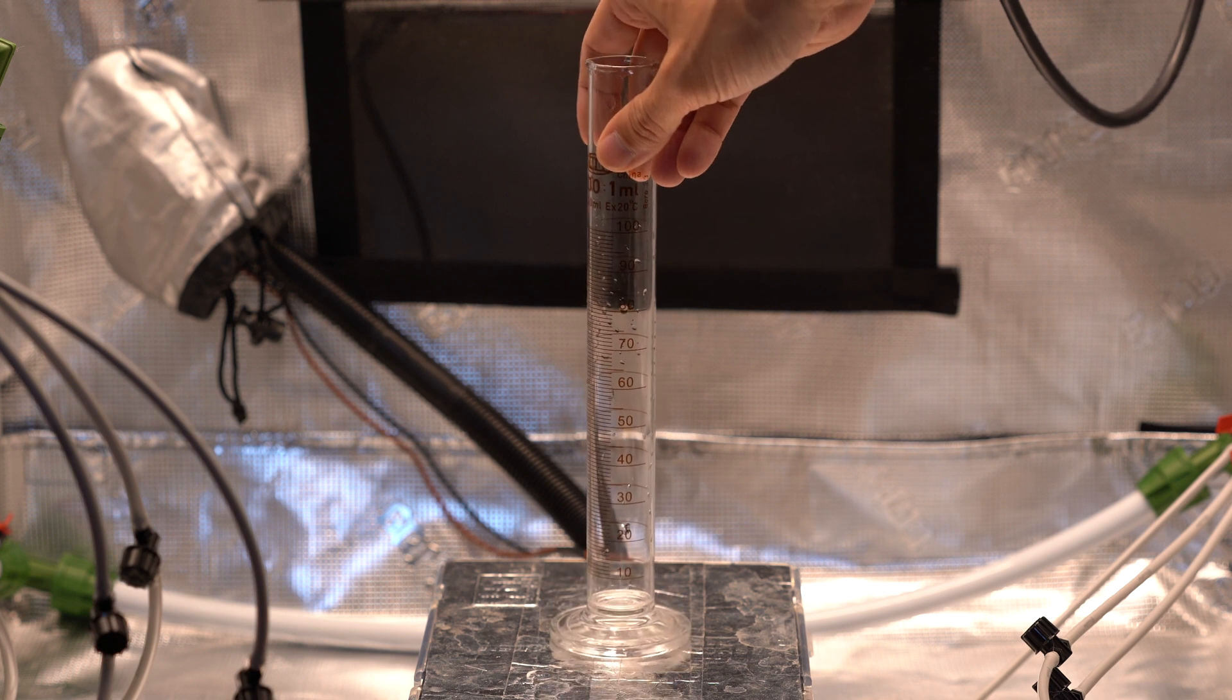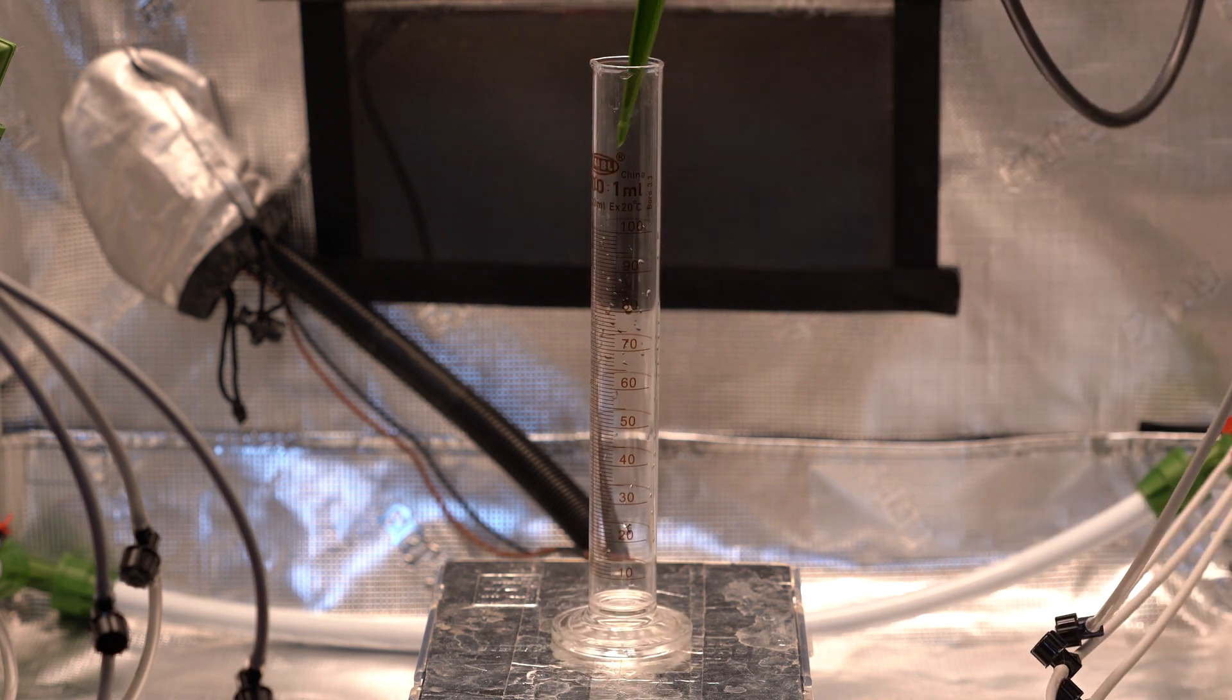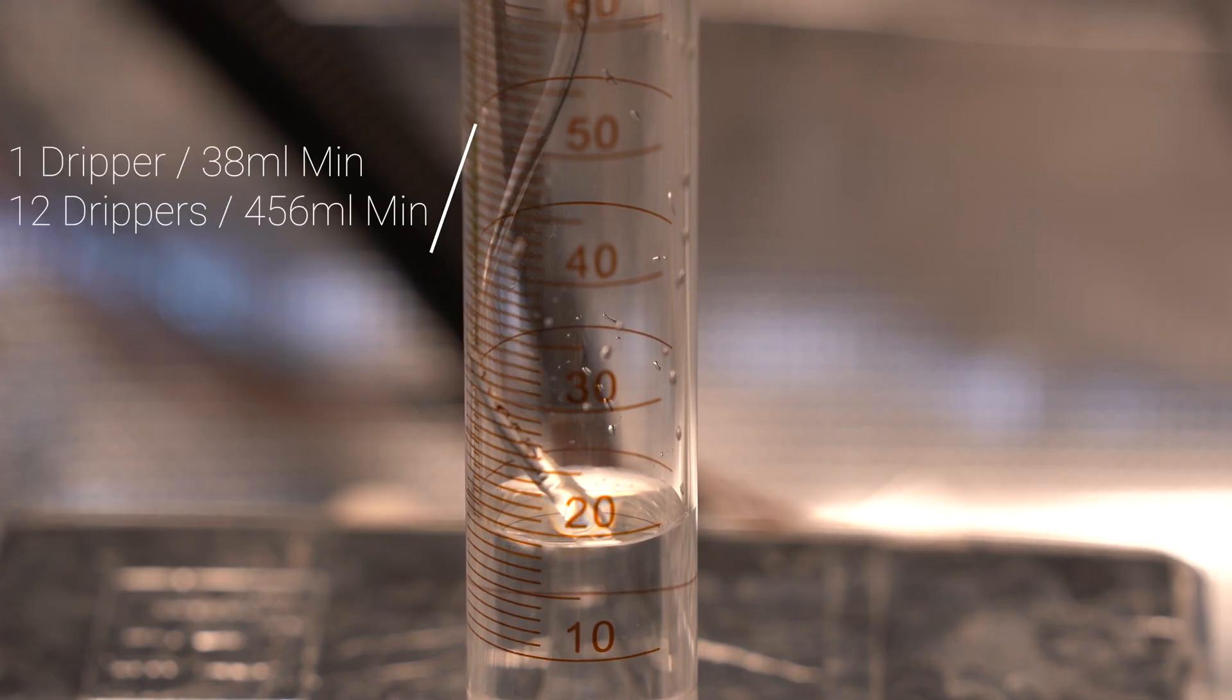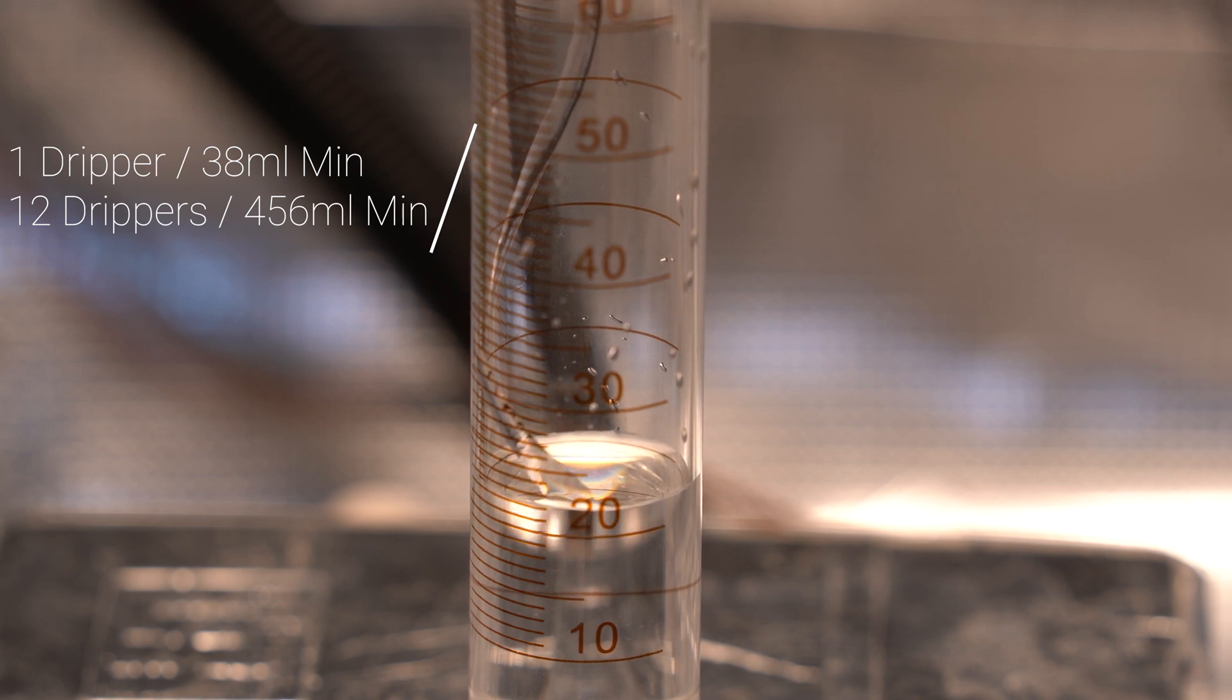After that, I wanted to see how much water one dripper was giving per minute. I put one dripper in my graduated cylinder and turned on the pump. After a minute, I was getting around 38 milliliters per dripper. I'll use this data when starting the grow to calculate how long I should be feeding.